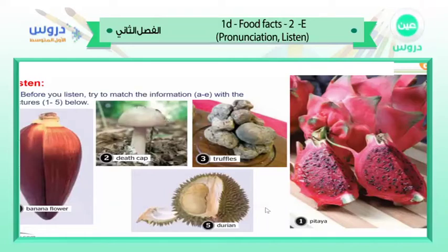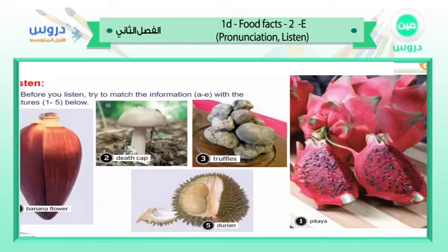Listen: 'Okay children, are you ready to begin the game? I've got some cards here with pictures on them. Let's see if you can name these different kinds of food. Here's the first one.' 'Lee: I think that's a durian.' 'That's right. For an extra point, do you know anything about durians?' 'They smell very bad.' 'That's right — they taste nice but they smell horrible.'